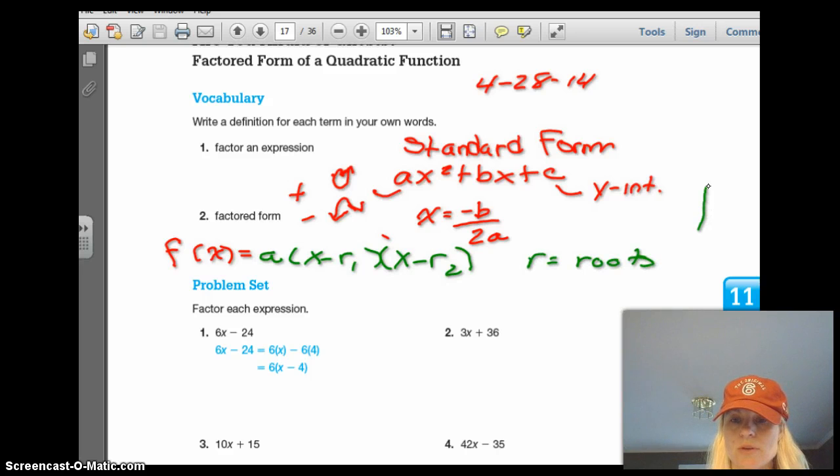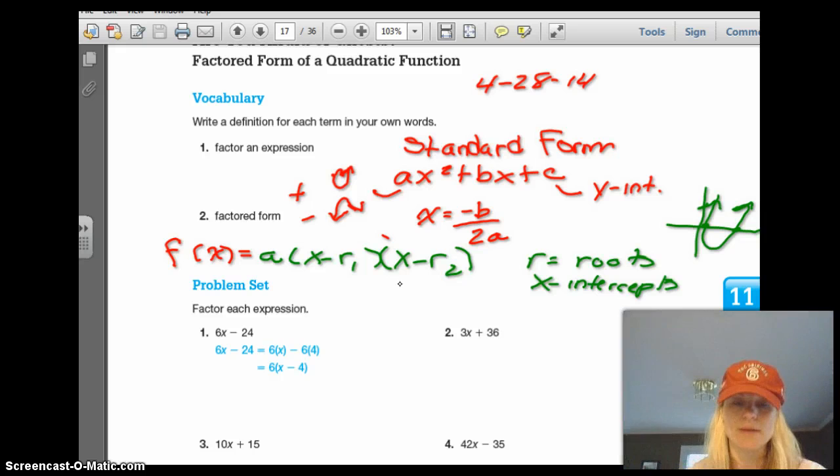And then hopefully you remember that the roots, it's kind of backwards or sideways, but the roots are where it crosses the x-axis. So these are the x-intercepts. So you can see when it's in factored form, it's really easy to find those roots. So we're going to work on some factoring.